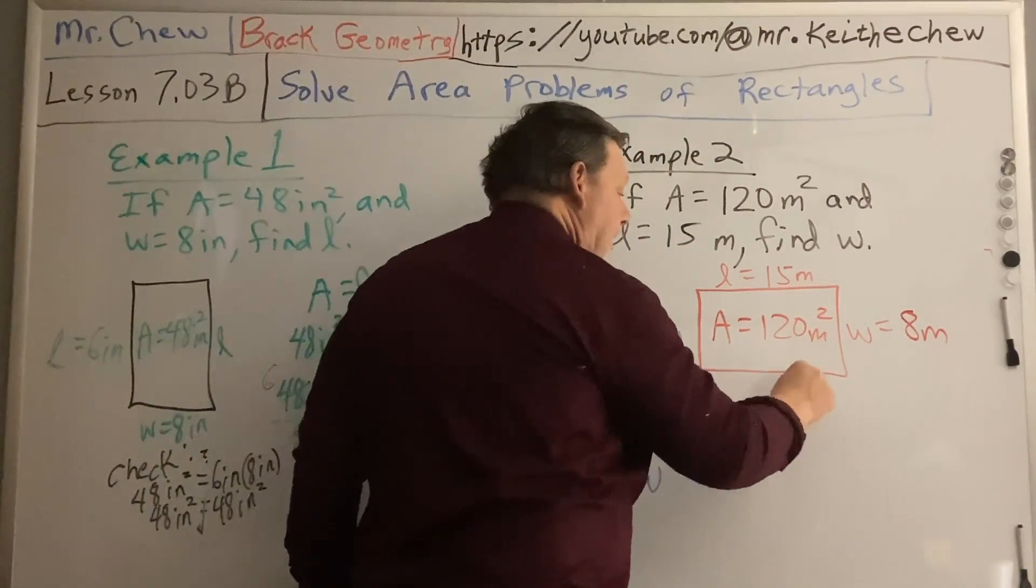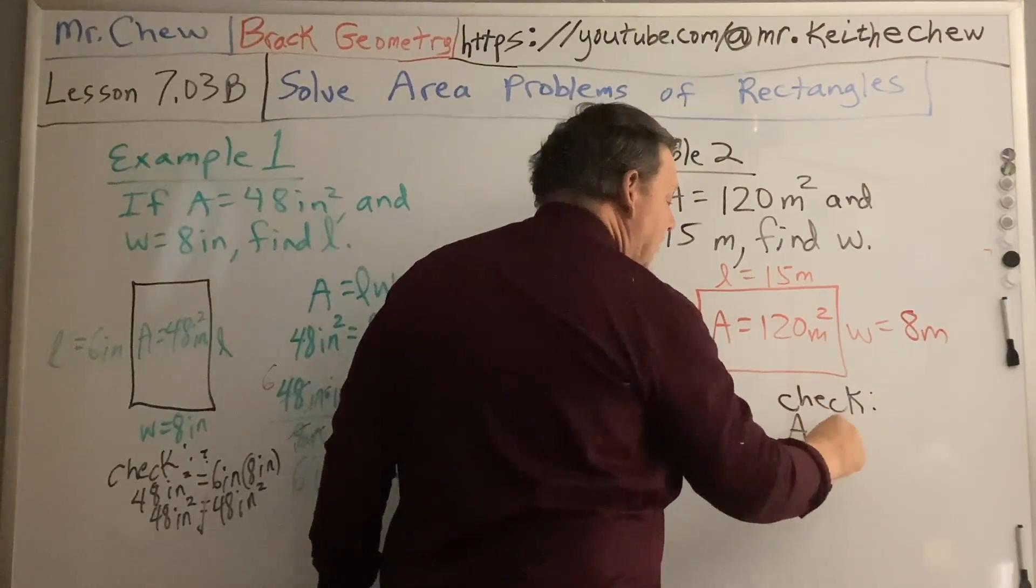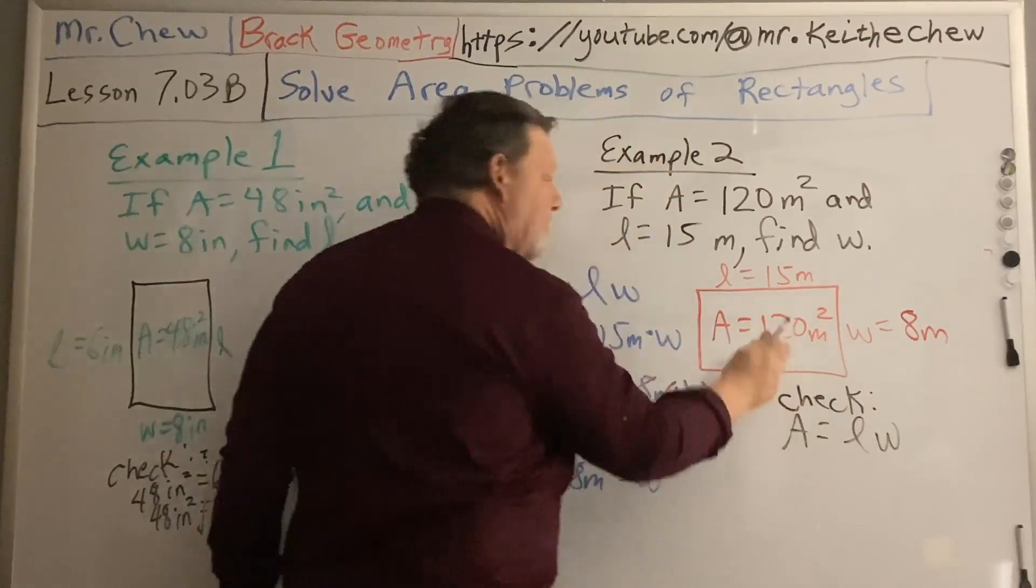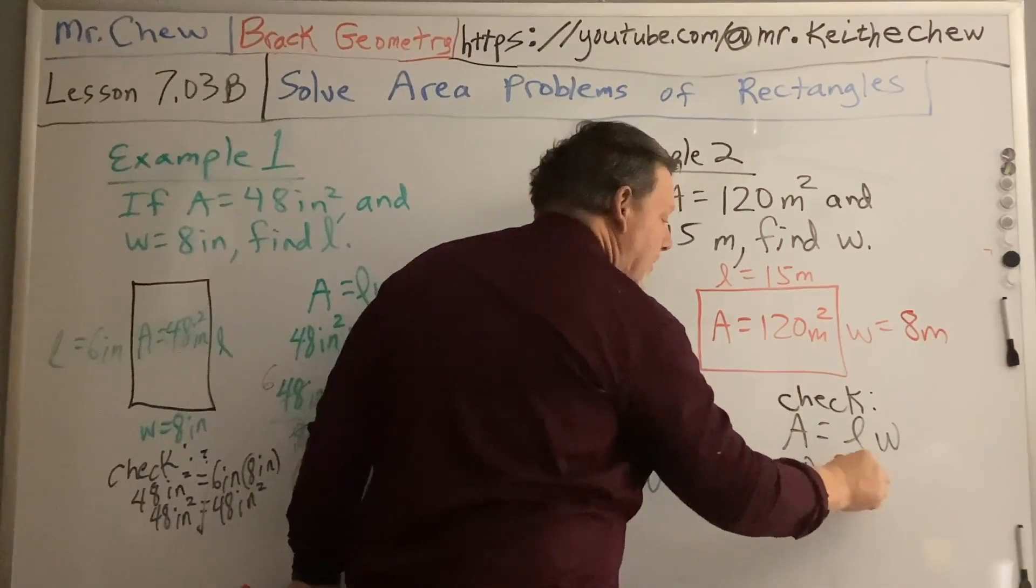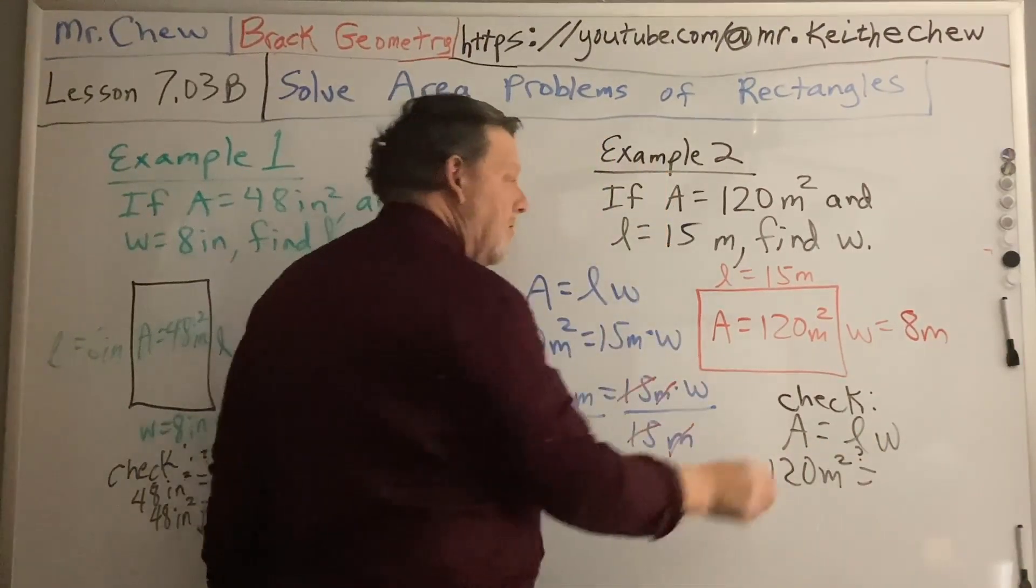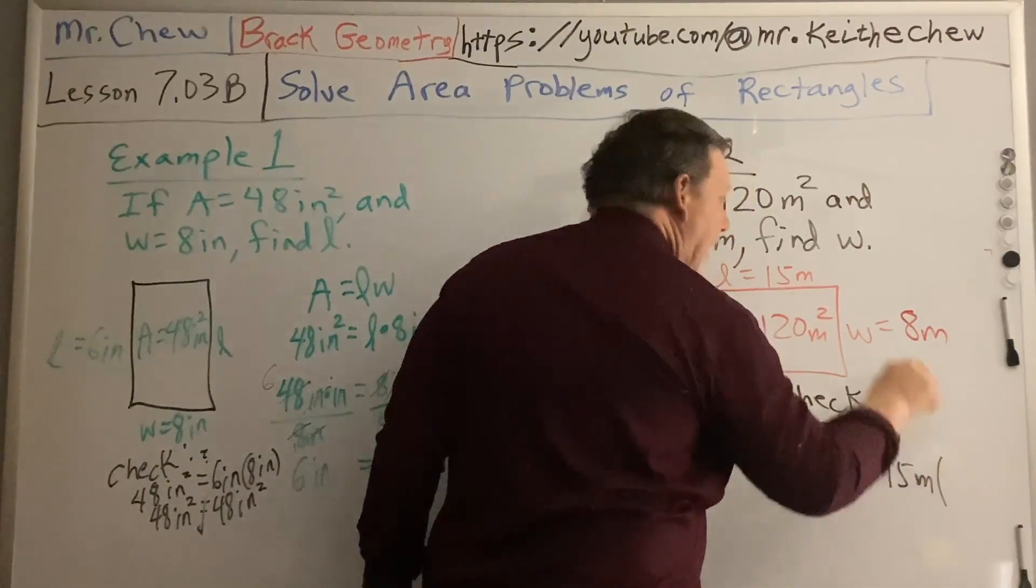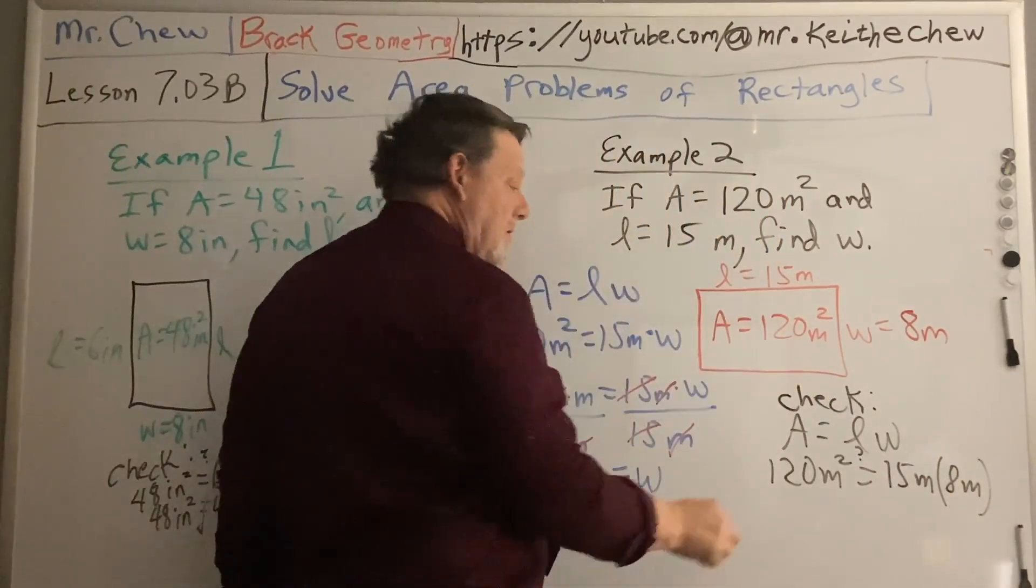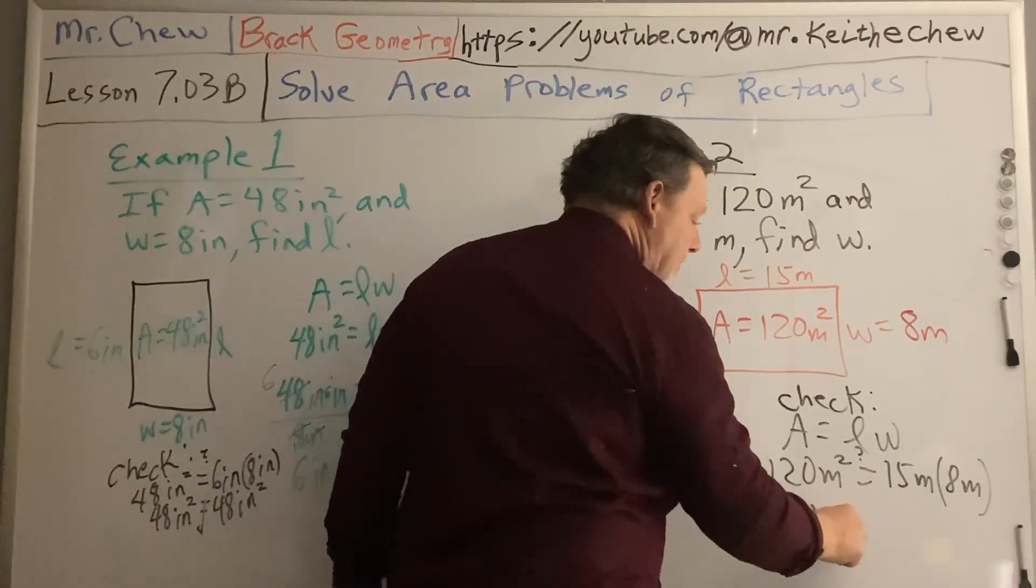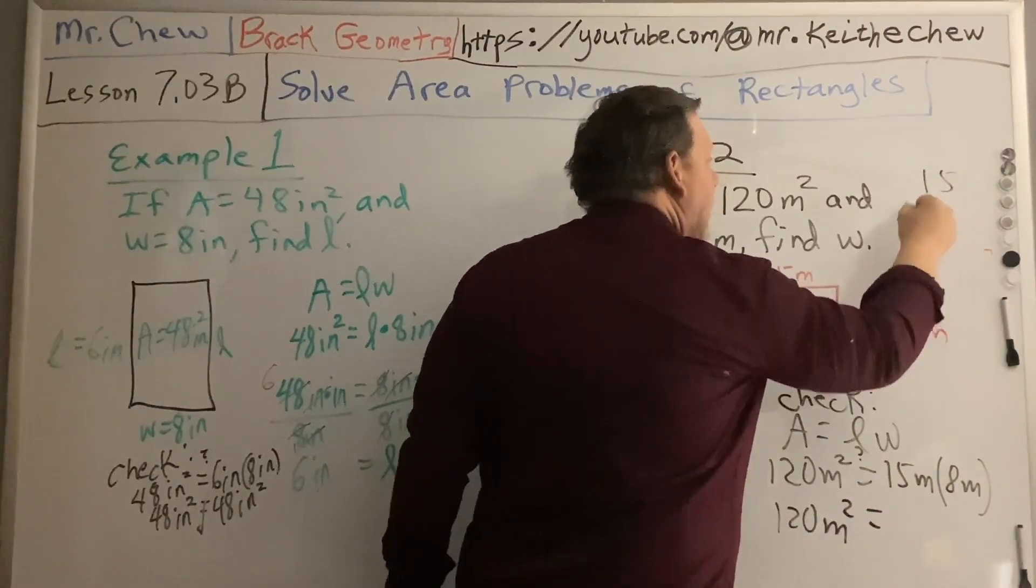Well, in the check, you're going to write your original formula down. And wherever there's an A, I'm going to put my 120 meters squared. Put a question mark here. My length, I know, is 15 meters. And I believe 8 meters is my width.